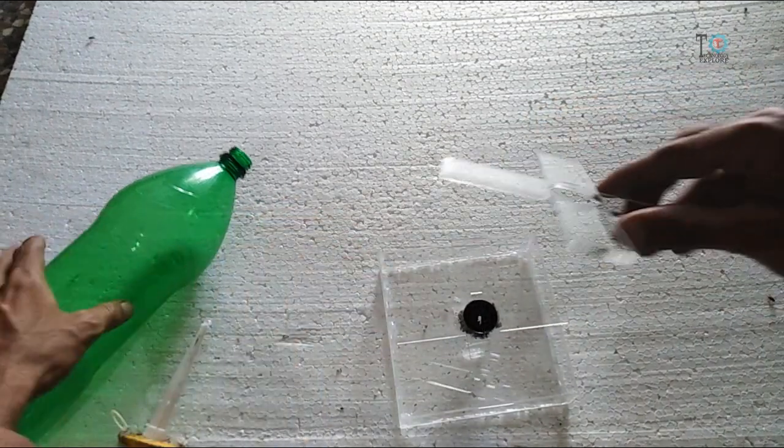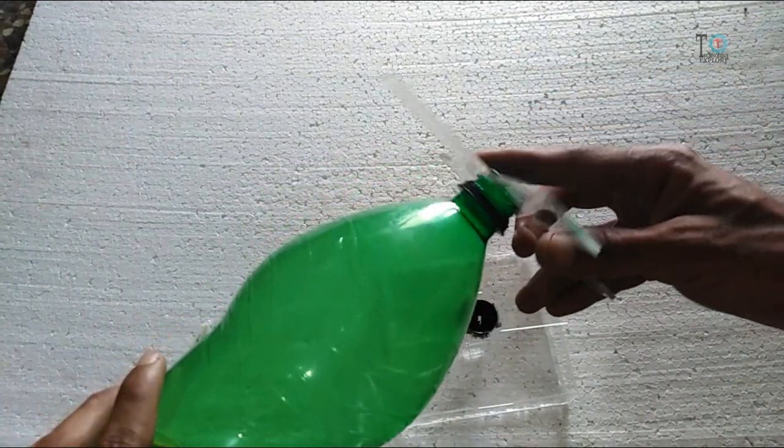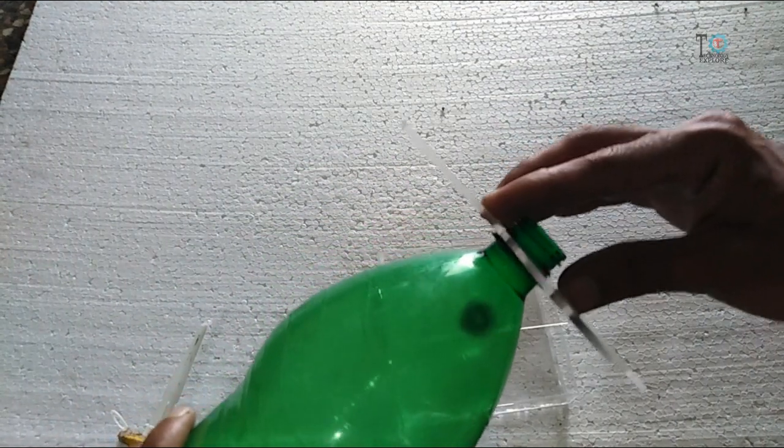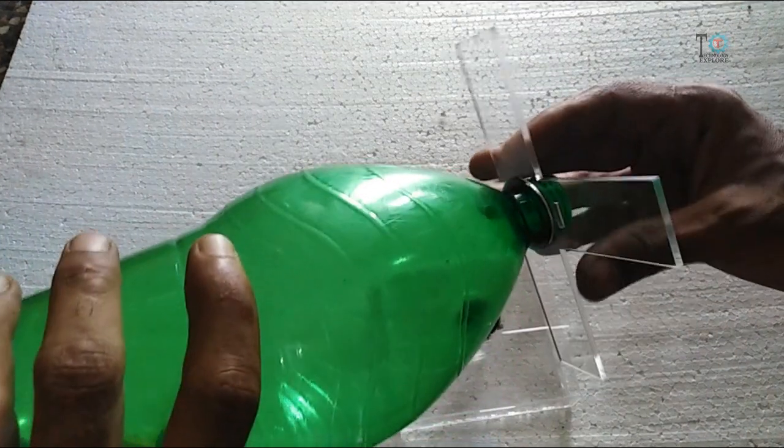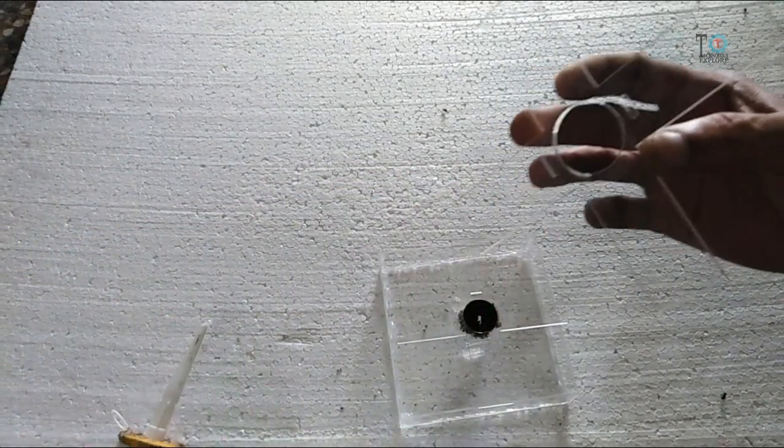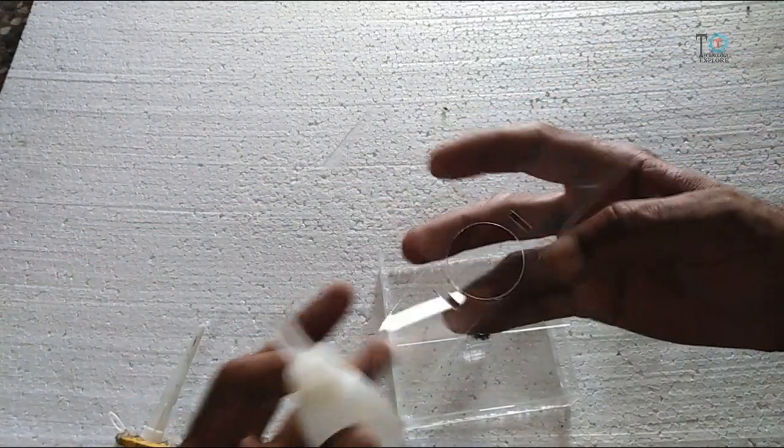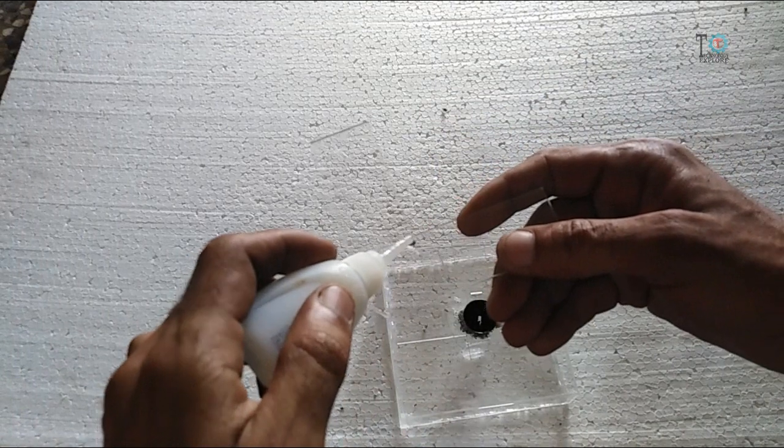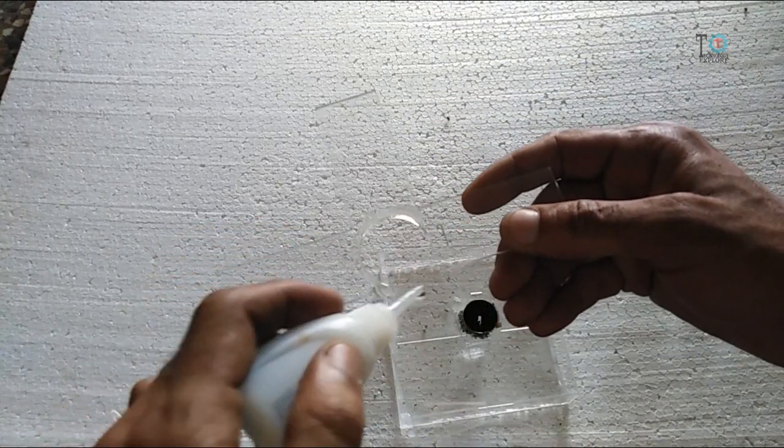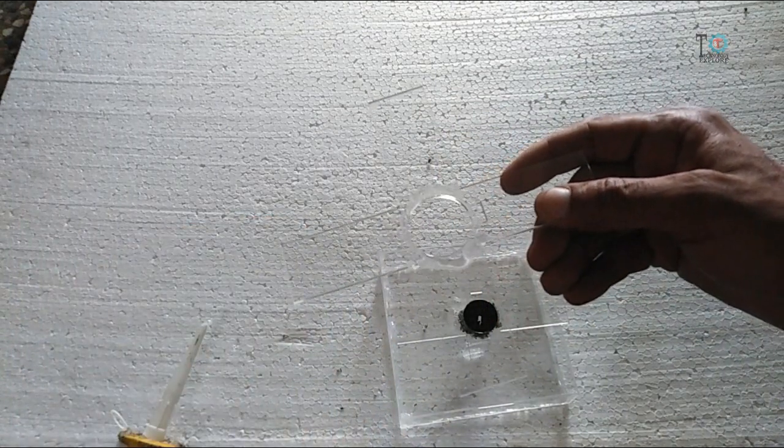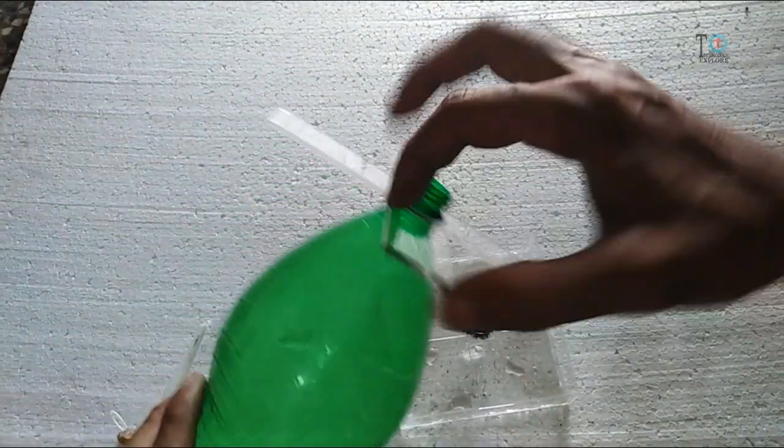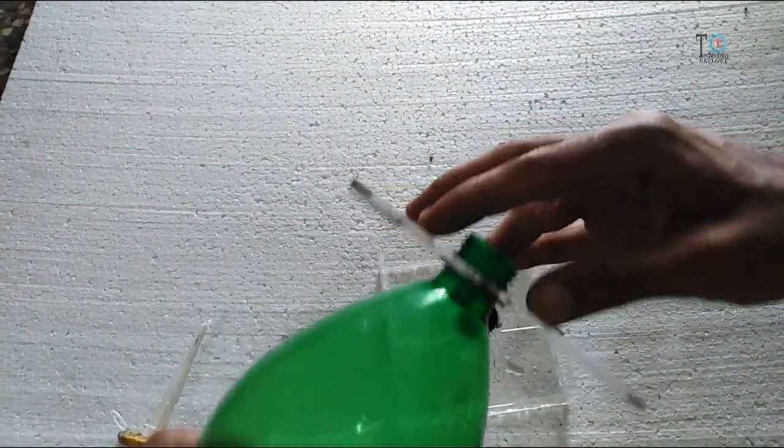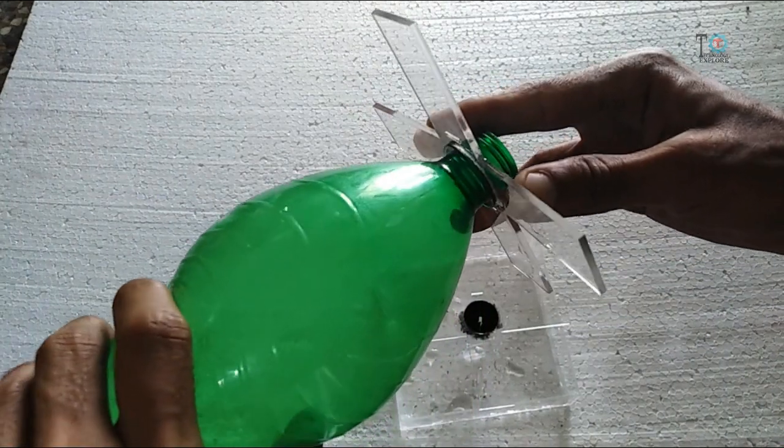So now let's talk about how you will attach the bottle when you have to feed grains to the bird. Now without cap, you will have to attach the bottle with the top acrylic sheet. So first pour the permanent glue and attach the bottle like this without cap.